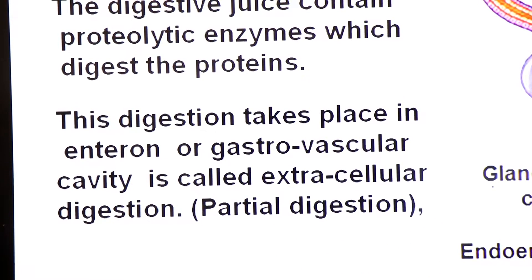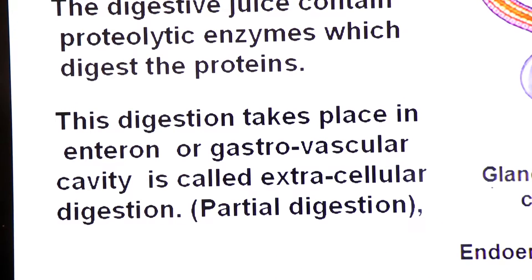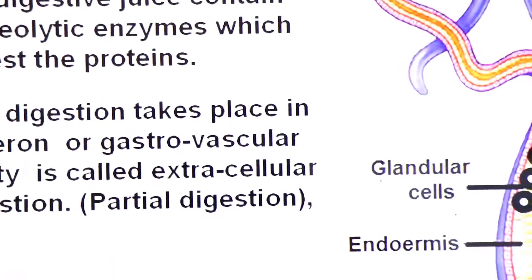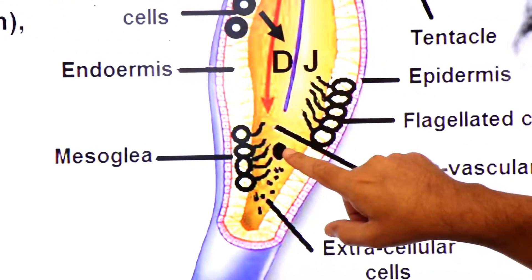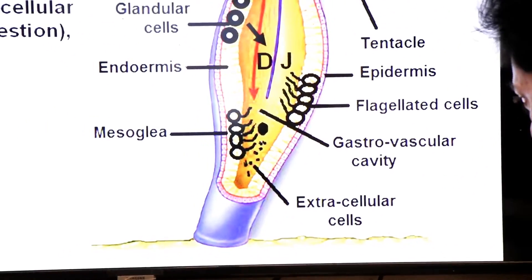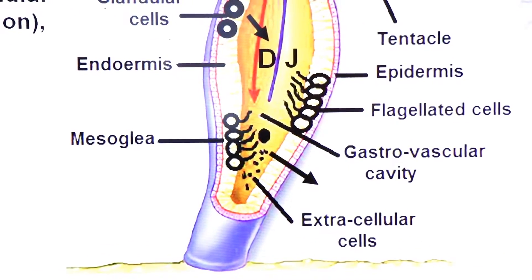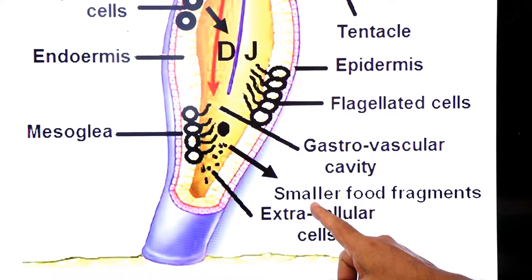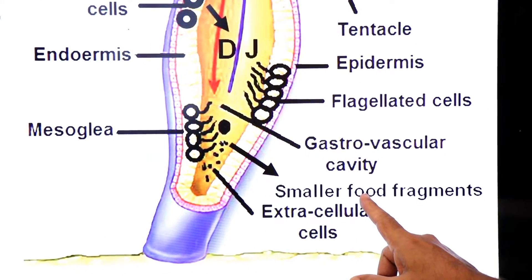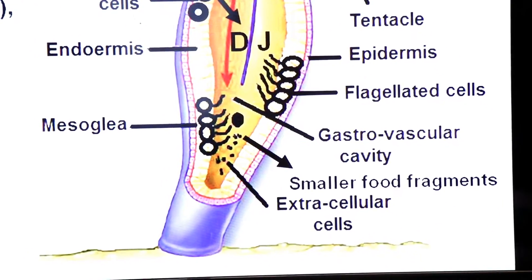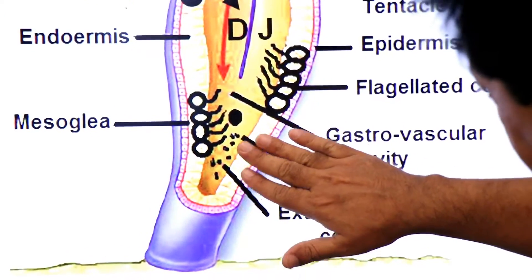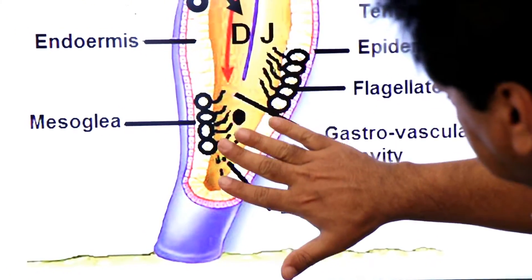The result is partially digested food — it is partial digestion. This food is broken into smaller pieces by the action of enzymes. These are smaller food fragments broken down by enzymatic action within the gastrovascular cavity.